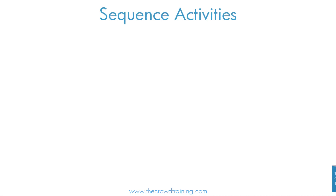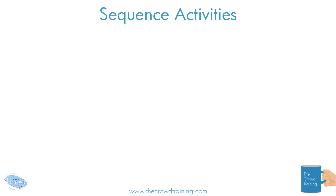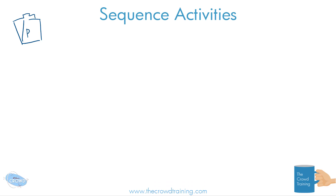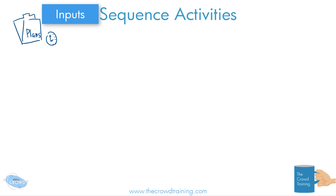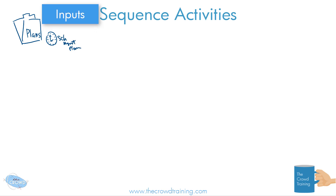Let's review the sequence activities process, starting with the inputs. We have a number of plans to work with, but obviously we're working with the project management plan, and ideally the schedule management plan, because this is schedule management. That's going to help influence how we go about sequencing our activities — the timing, the ways things are divided up.